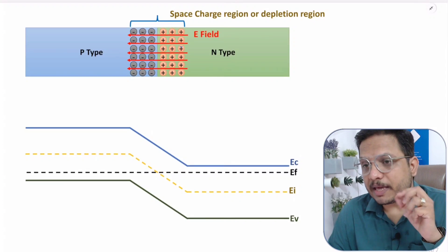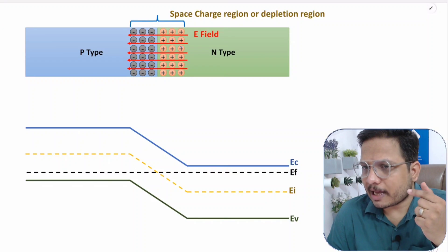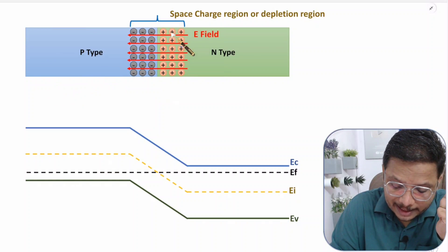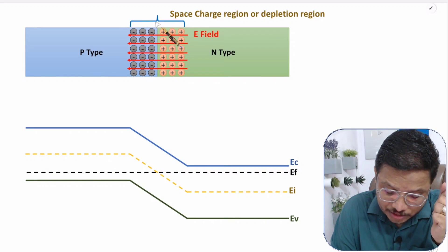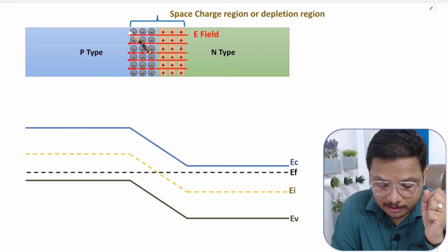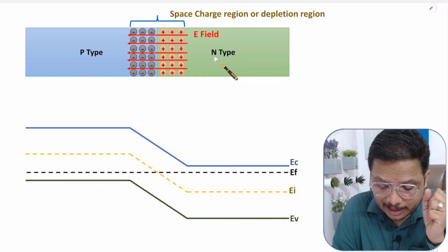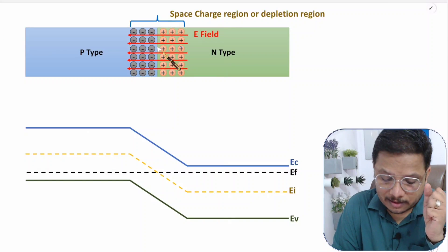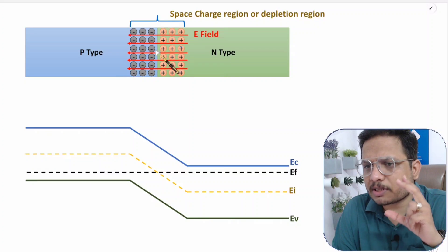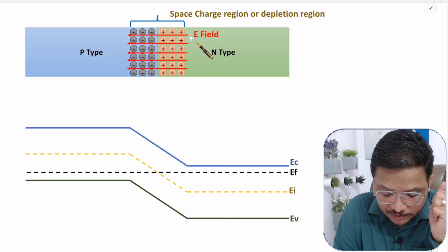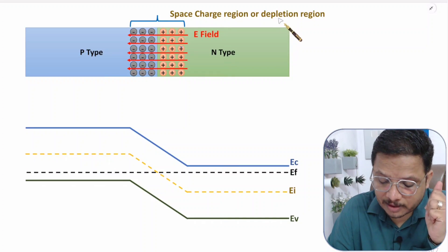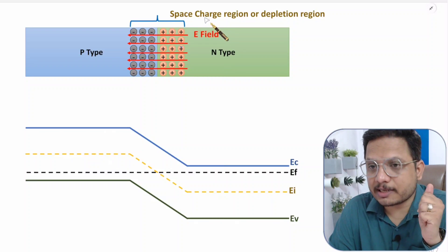P-N junction explanation I have given in my last video. When you diffuse P-type and N-type material together, at the junction there will be formation of ions. At P-type side, we are having negative ions, and at N-type side we are having positive ions. Because of these ions, there is a formation of potential barrier, and there will be an electric field. This region is referred as depletion region or space charge region.